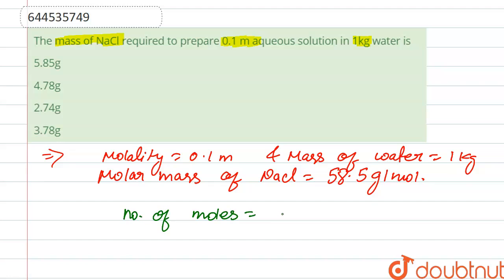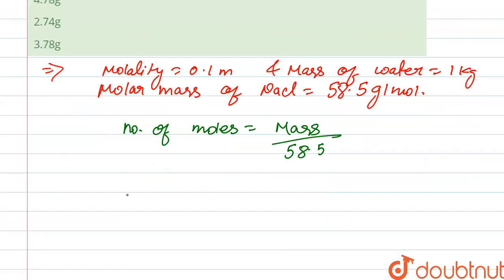Number of moles, that is mass upon molar mass, which is 58.5. So here, see, molality is given, so we relate molality with number of moles. So it is equal to number of moles of solute upon mass of solvent in kg.